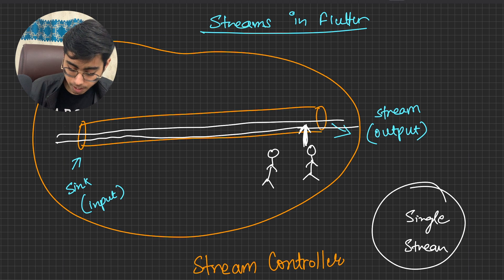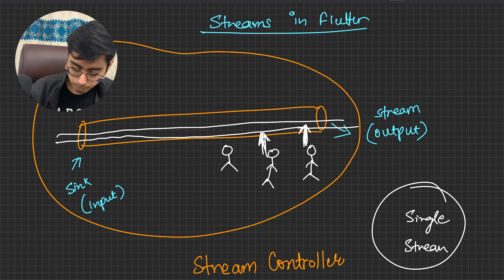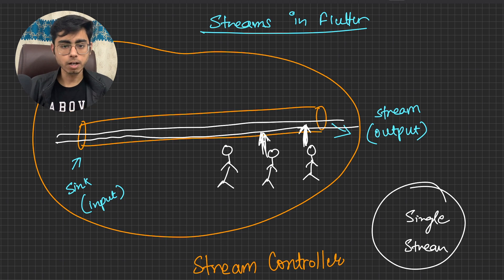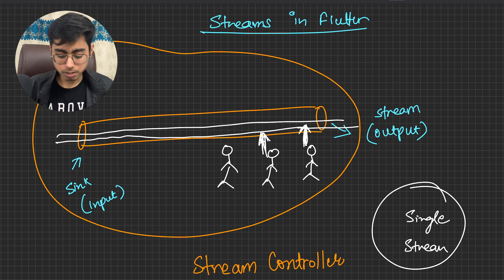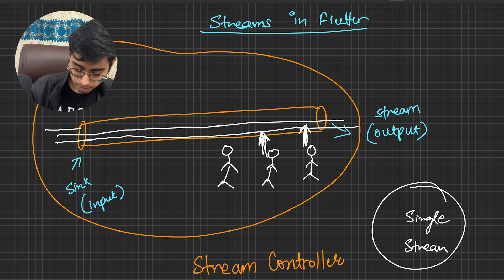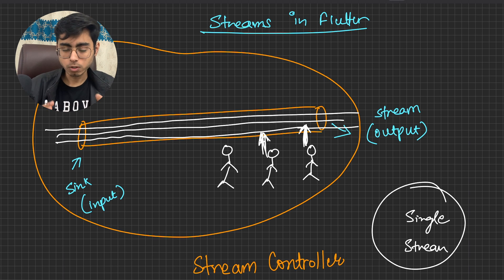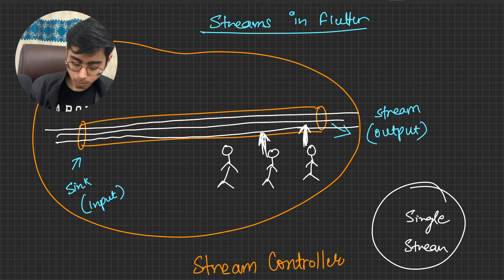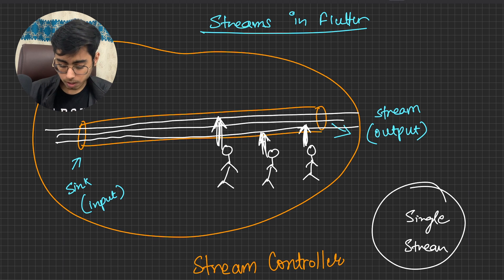If I want one more subscriber, I have to have one more stream. In Flutter widgets, you can consider subscribers as Flutter widgets — they are the widgets listening continuously to this data stream. If I want one more widget listening, I need one more stream. In the same StreamController, the same data will flow inside these streams, but streams are different because one stream can only have one subscriber.